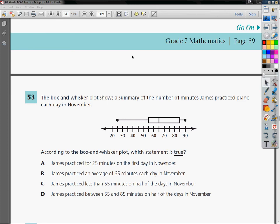James practiced for 25 minutes on the first day in November. Now, it is true that there is a mark at 25. The problem is, a box and whisker plot won't tell you anything about when things happen. Just that at some point, the day he did the least amount of work, he did do 25 minutes. And it is possible that on the first day of November, he was the biggest slacker of the whole month, and that is the day that he did 25. But the box and whisker plot can't tell us that, so it doesn't tell us anything about date.